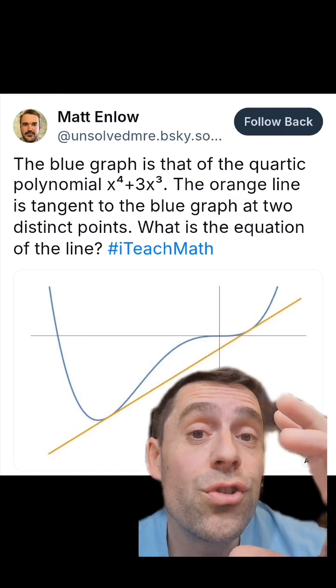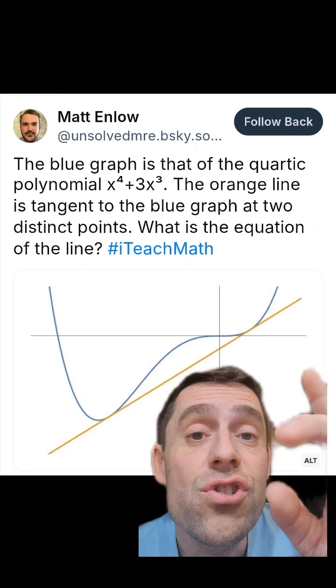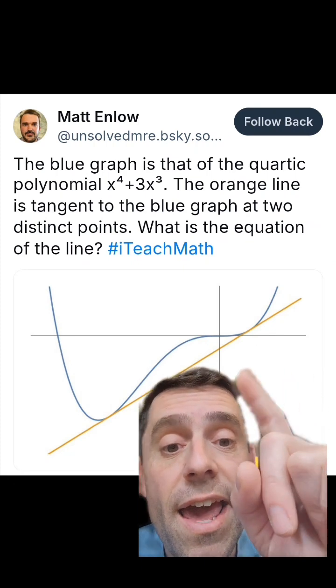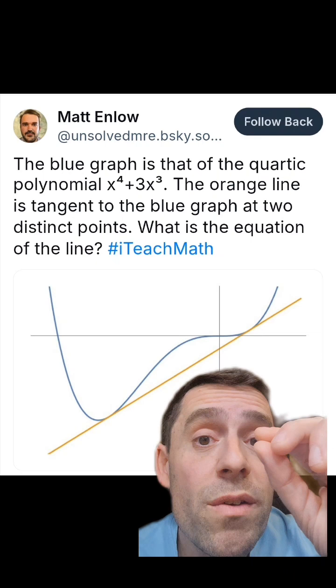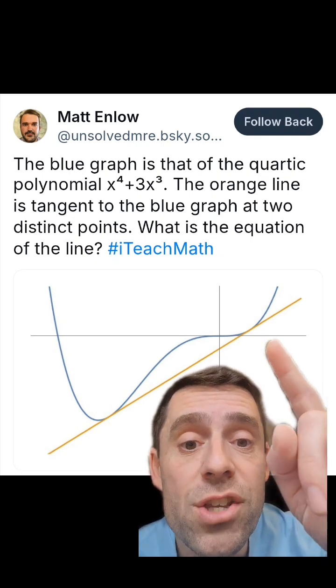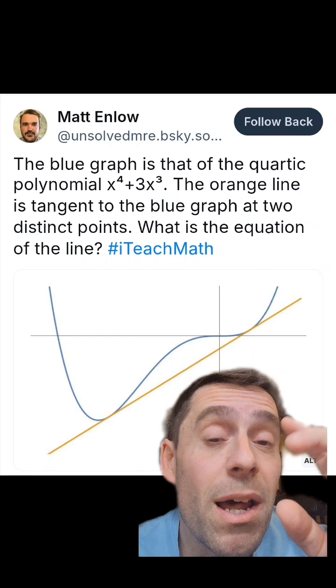Now, the second option is to use calculus because the orange line is the tangent line at, say, x equals a. And what I'm looking for is a point a where that tangent line is tangent at some other point.